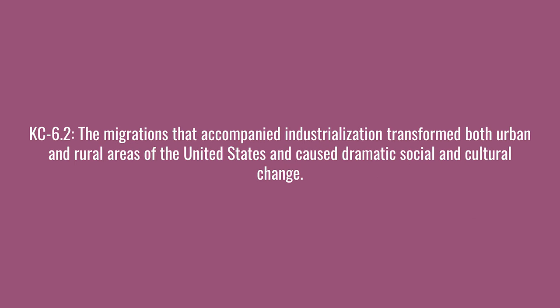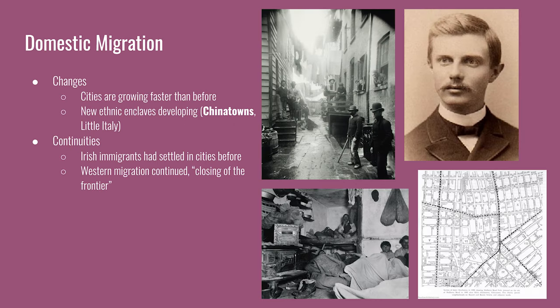The next key concept: the migrations that accompanied industrialization transformed both urban and rural areas of the United States and caused dramatic social and cultural change. The change is the new wave of immigration — migrants settle in cities, which therefore grow faster than ever before. Immigrant groups settle in ethnic enclaves like Chinatowns and Little Italys, where they retain some portion of their identity and culture while slowly assimilating into American culture. For continuities, Irish immigrants in the middle of the century had also settled in cities. As for internal migration, Western migration continued, so much so that the frontier had disappeared. Frederick Jackson Turner's frontier thesis worried that the source of innovation the frontier provided was now gone and a new chapter in American history had begun.